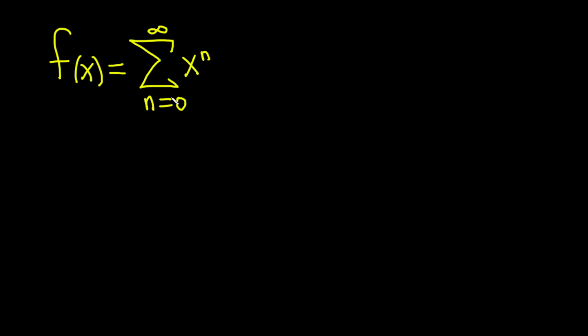So we have a function here, f of x, and it's equal to this infinite sum. It goes from 0 to infinity and we have x to the n. And what we're going to do is just take the derivative of this. So let's just do it and we'll run into the problems when we run into them.